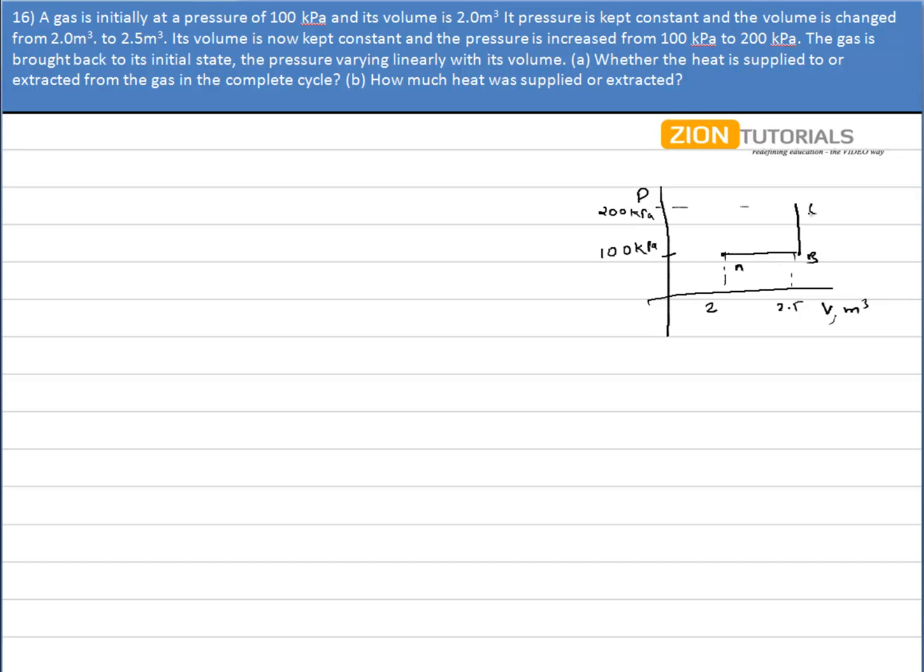And after that, the gas is brought back to its initial state with the pressure varying linearly with its volume, like this. So the direction of the cycle is this.